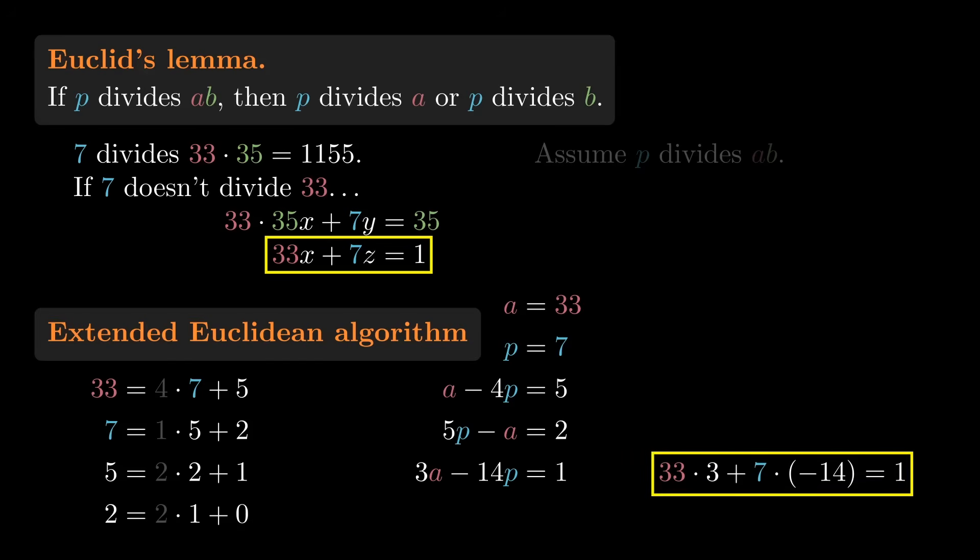So it gives us one pair of values that works. X equals 3, and Z equals negative 14. To get Y, we multiply both sides by 35, and use the fact that 33 times 35 is 1155. Since Y is 35Z, Y is negative 490.